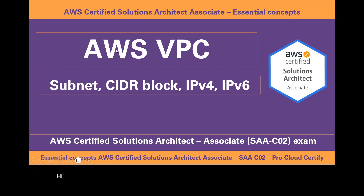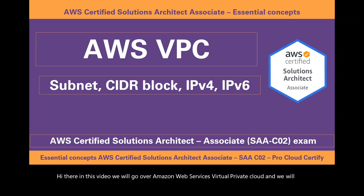In this video we will go over Amazon Web Services Virtual Private Cloud and we will go over various VPC components such as a VPC subnet, a CIDR block and IPv4 and IPv6 addresses.